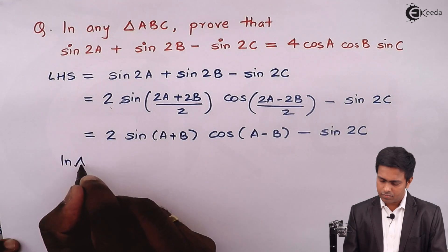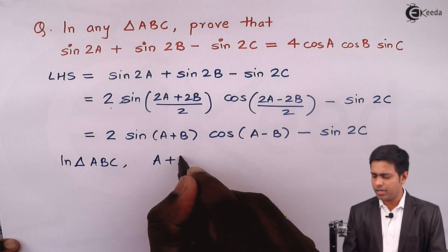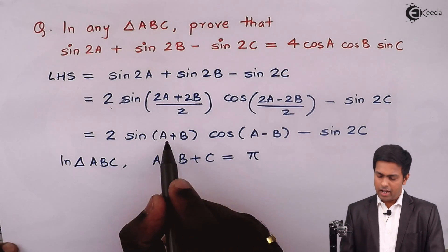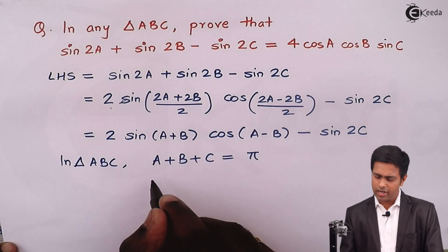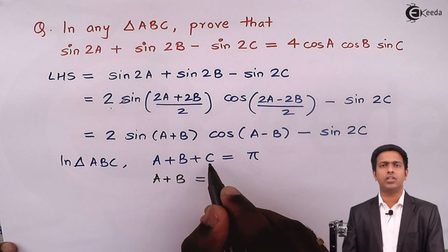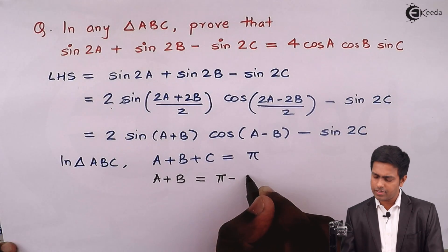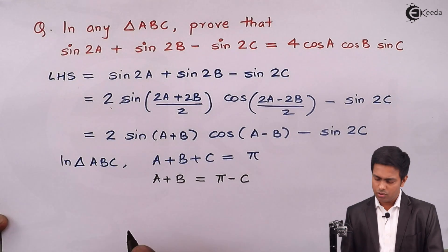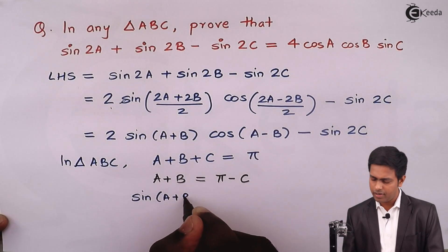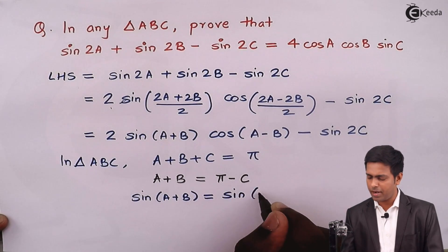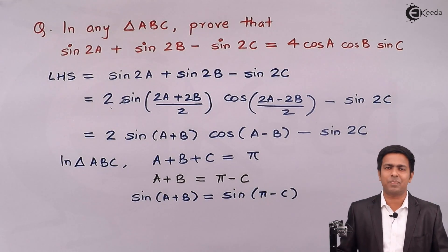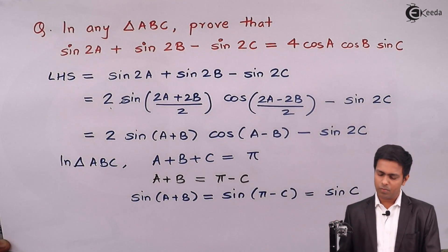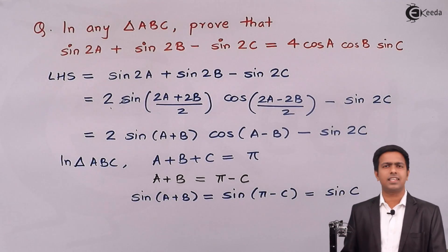In triangle ABC, A plus B plus C equals pi. To find sine(A plus B), keep A plus B on the left side and shift C to the other side: A plus B equals pi minus C. Taking sine on both sides gives sine(A plus B) equals sine(pi minus C), and since sine(pi minus C) equals sinC, the value of sine(A plus B) is sinC.